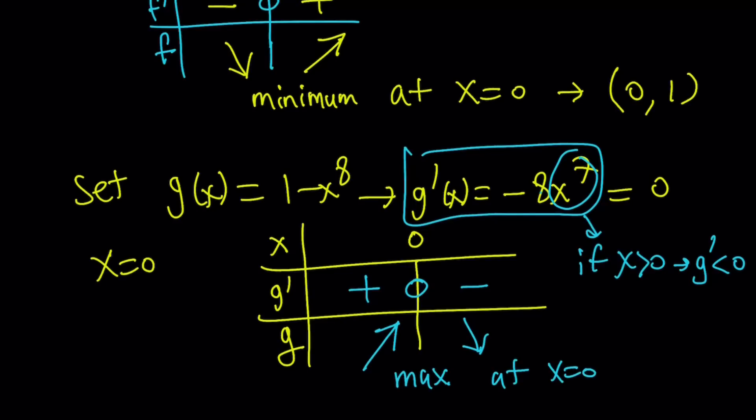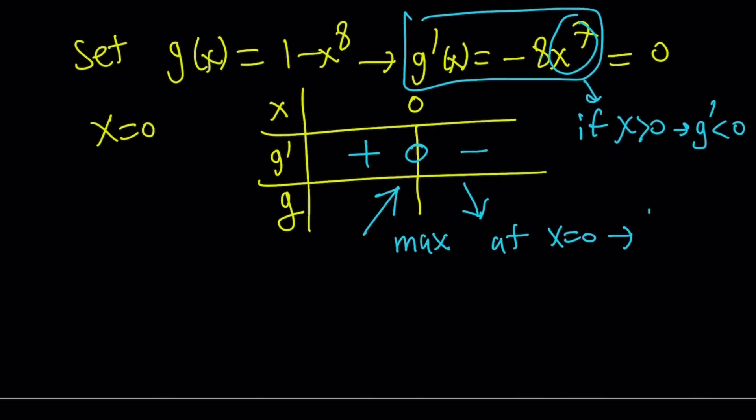Is this, again, 0, 1? Yep. It is the same point. Because if you replace x with 0, you get y equals 1. That's actually why x equals 0 was a possible solution, because you get the same y value. In other words, those two graphs intersect. Make sense? Great.